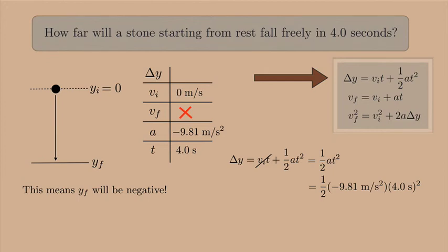Type it into a calculator and you get negative 78 meters. Now remember, y final was negative and delta y is y final minus y initial. And I set y initial equal to 0 on my coordinate system. So it makes sense that I have a negative answer here. This means that the stone fell 78 meters.